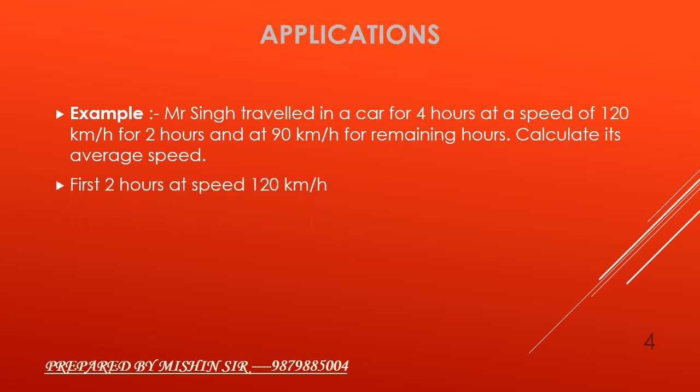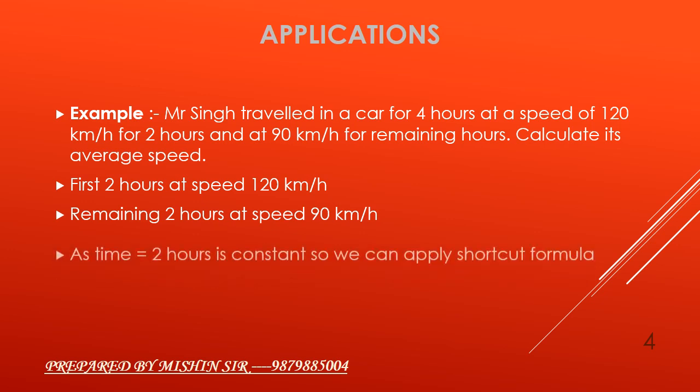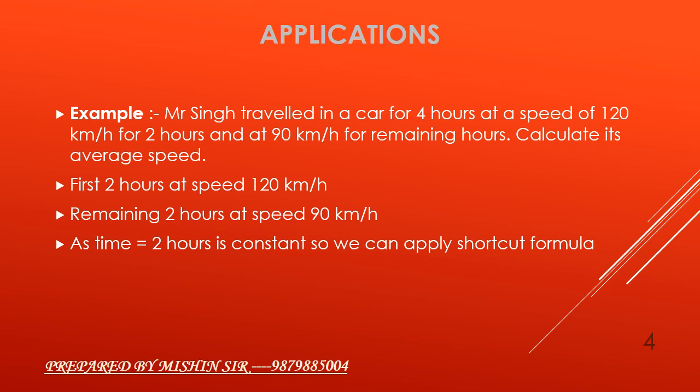First 2 hours at speed of 120 kilometer per hour. Remaining 2 hours at speed of 90 kilometer per hour as total time was 4 hours. As time equal to 2 hours is constant, so we can apply shortcut formula.